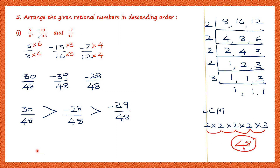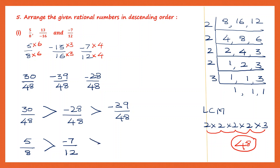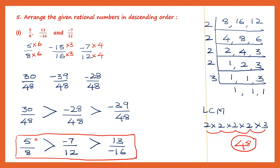Going back to the main question for the final answer: 30 by 48 is the greatest, which is 5 by 8. This is greater than minus 28 by 48, which is minus 7 by 12. And that is greater than the last one, minus 39 by 48, which is 13 by minus 16. So we have arranged the rational numbers in descending order: 5 by 8 is greater than minus 7 by 12, which is greater than 13 by minus 16.